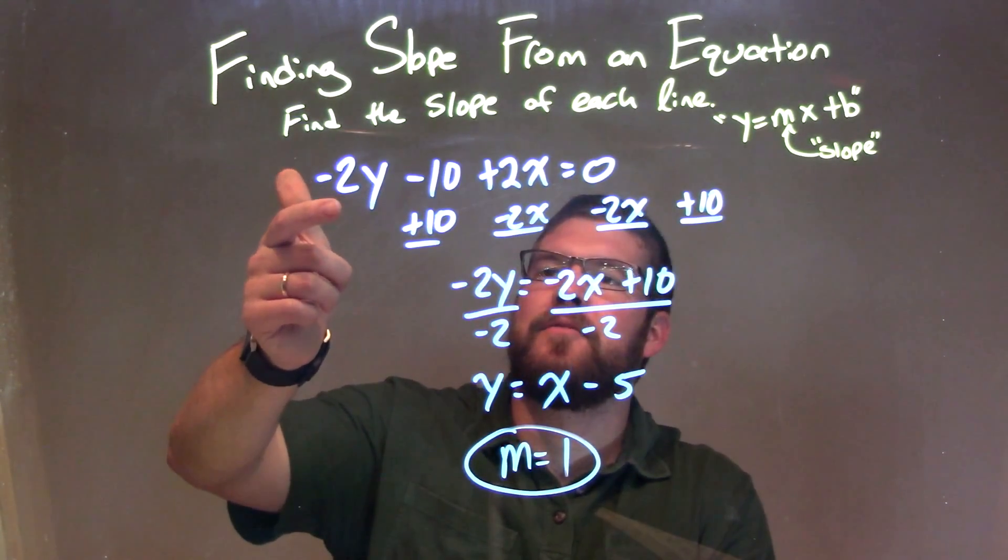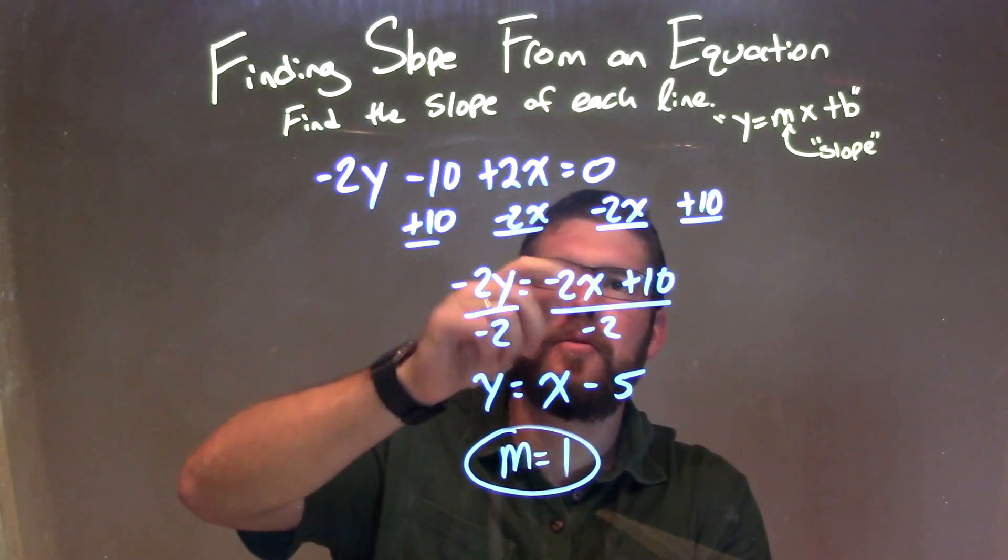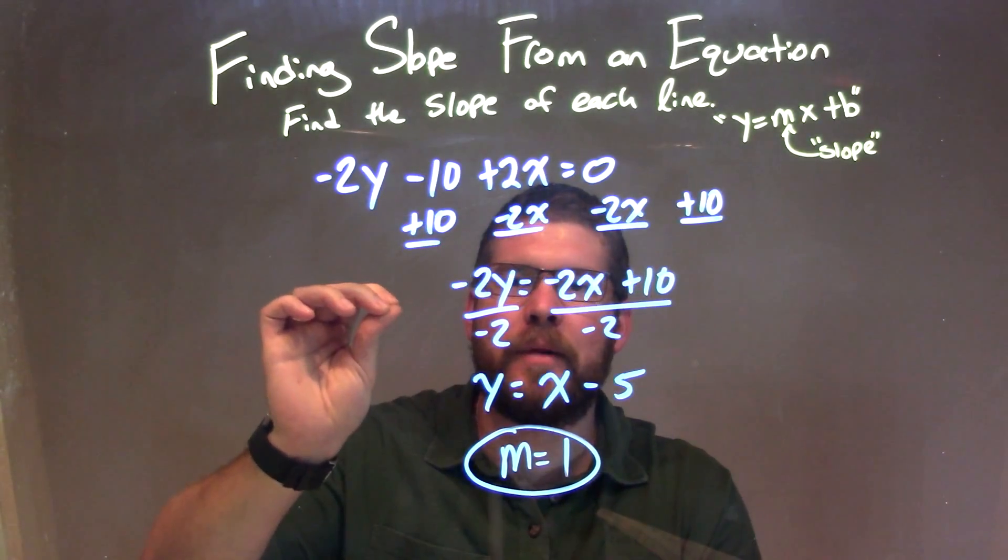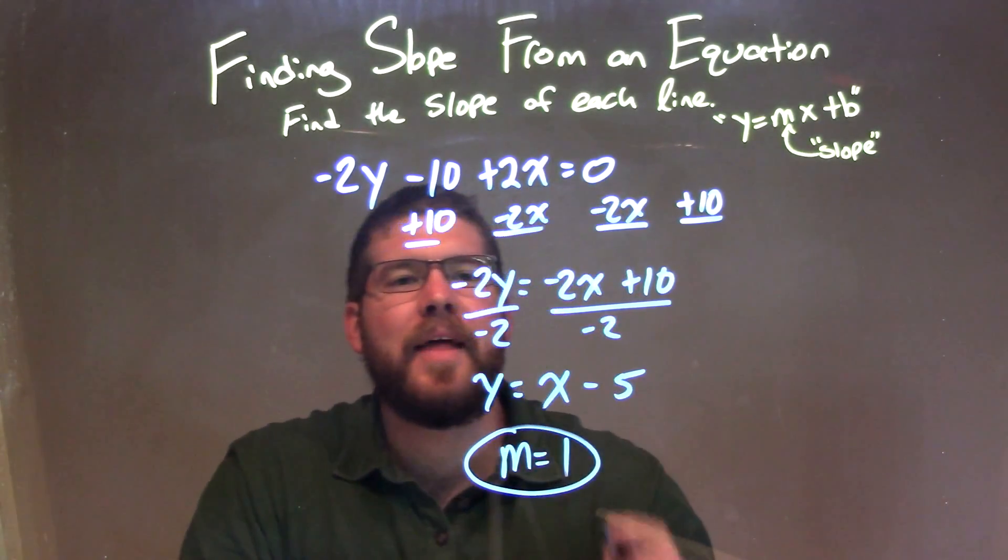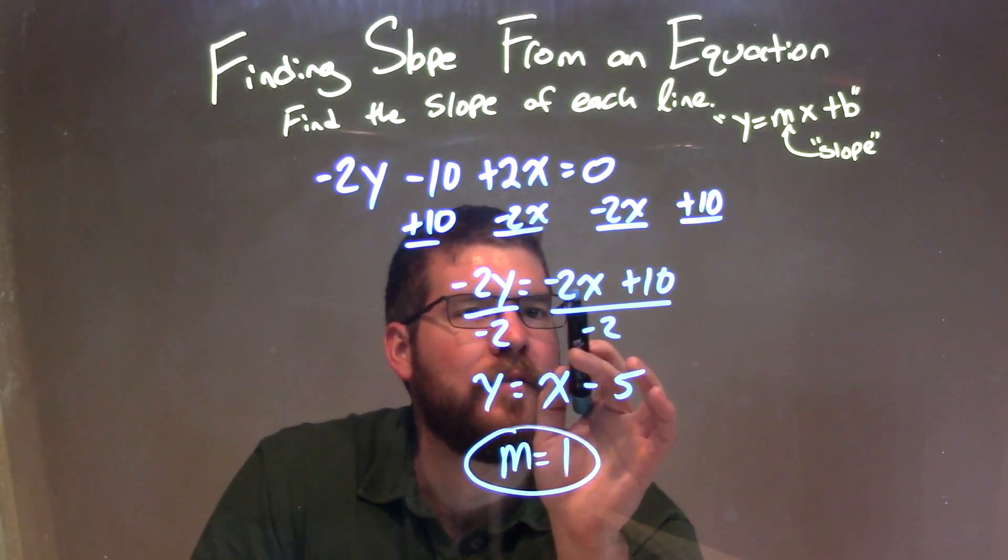So let's recap. We're given negative 2y minus 10 plus 2x equals 0, and I need to isolate my y. So I added 10 to both sides and subtracted 2x from both sides. That gave me negative 2y equals negative 2x plus 10.